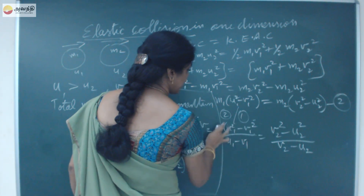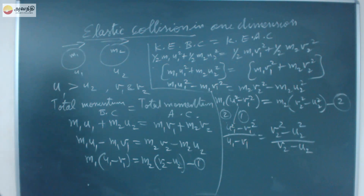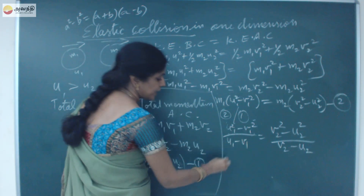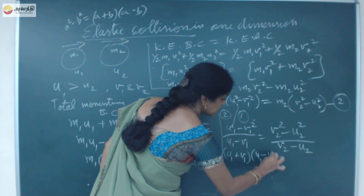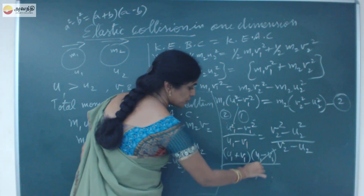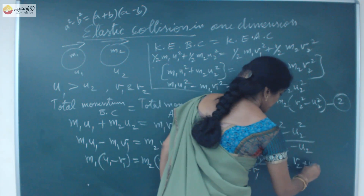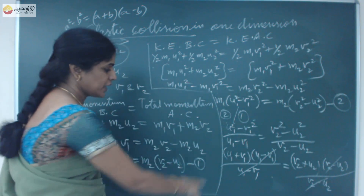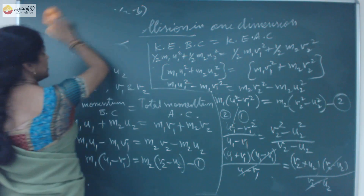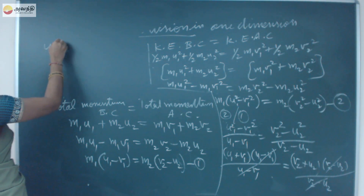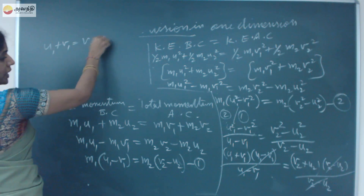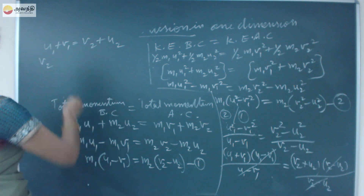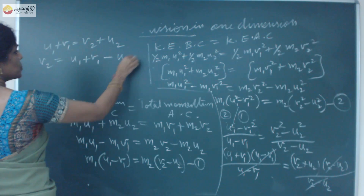The left-hand side becomes (U1 squared minus V1 squared) divided by (U1 minus V1), and the right-hand side becomes (V2 squared minus U2 squared) divided by (V2 minus U2). Using the identity A squared minus B squared equals (A plus B)(A minus B), and cancelling common factors, we get U1 plus V1 equals V2 plus U2.